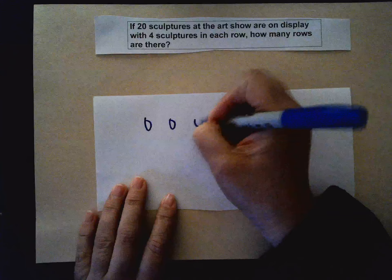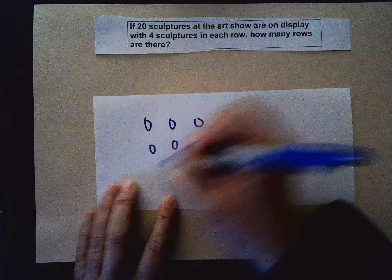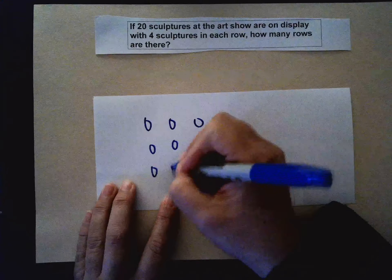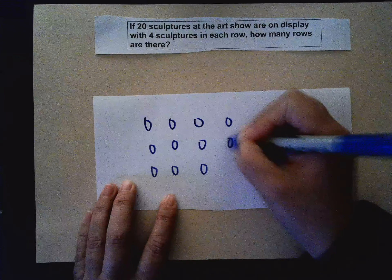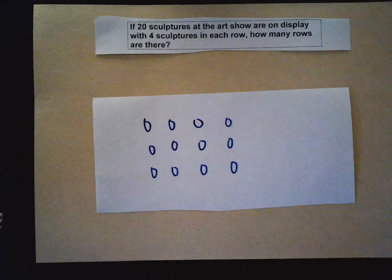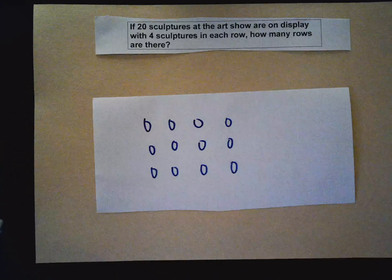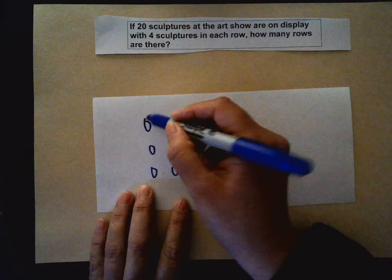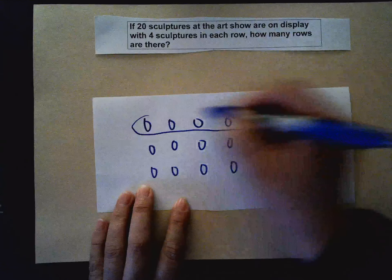The first thing that you need to learn about arrays is that there are rows and columns. So if I'm making an array, it's an arrangement of objects using columns and rows. So here is a row — this is a row right here.